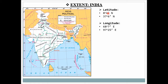India's latitudinal extent is 8 degrees 4 minutes to 37 degrees 6 minutes. Degrees are divided into minutes, and minutes are divided into seconds. The southern part is at 8 degrees 4 minutes latitude, and the northern part is at 37 degrees 6 minutes latitude. The longitudinal extent is 68 degrees 7 minutes to 97 degrees 25 minutes.